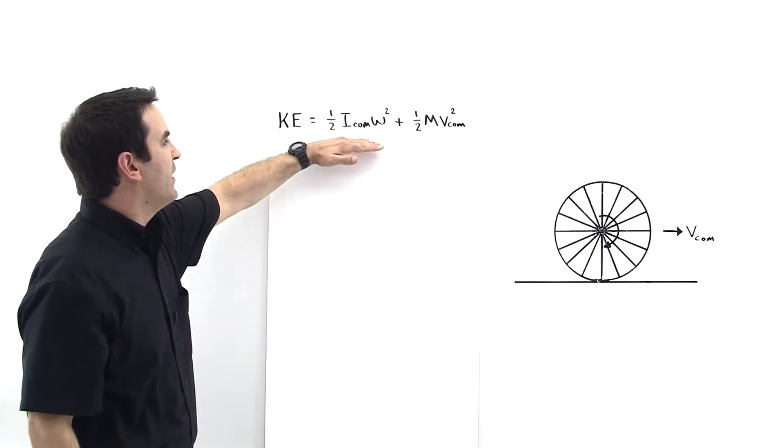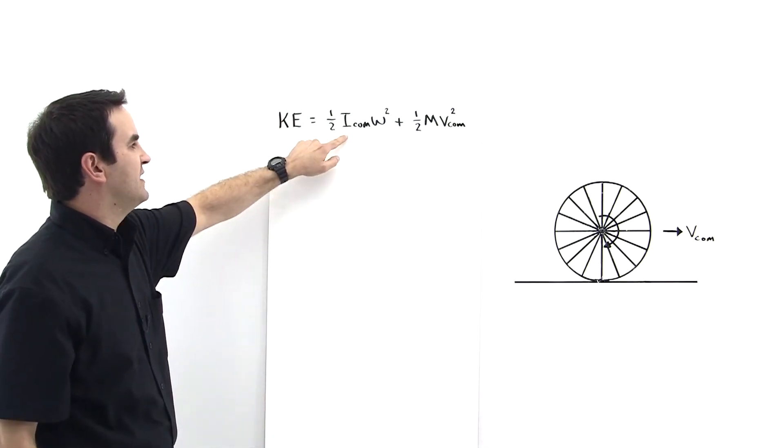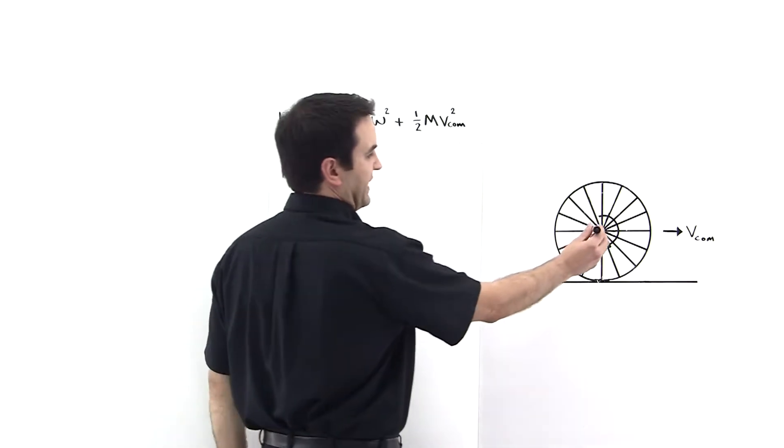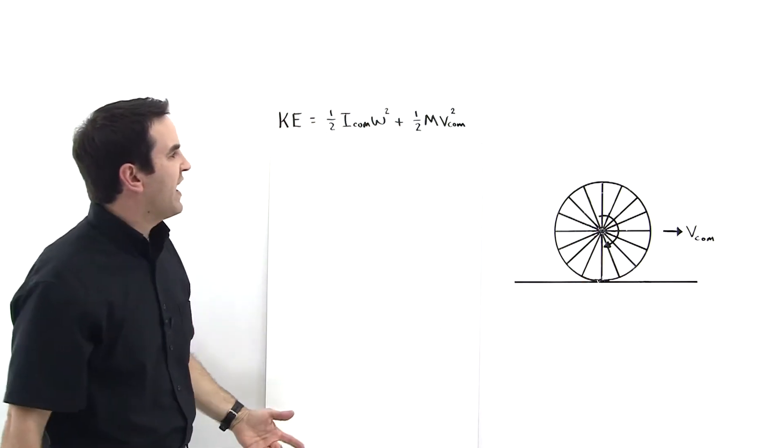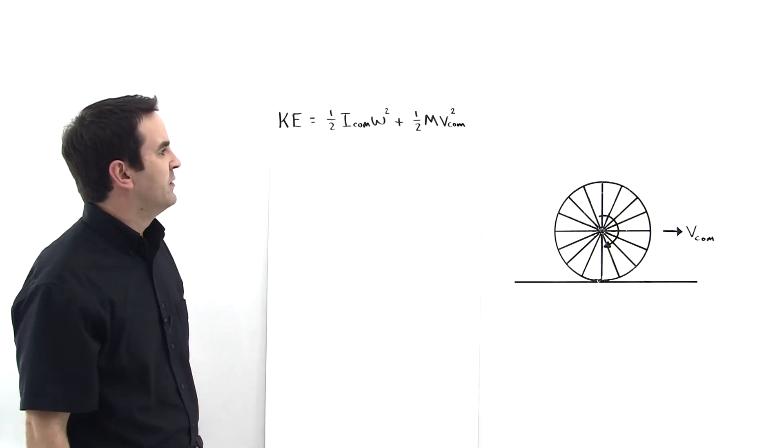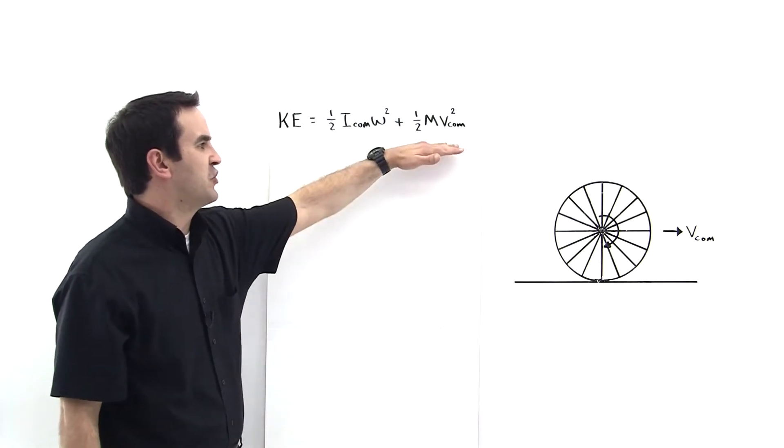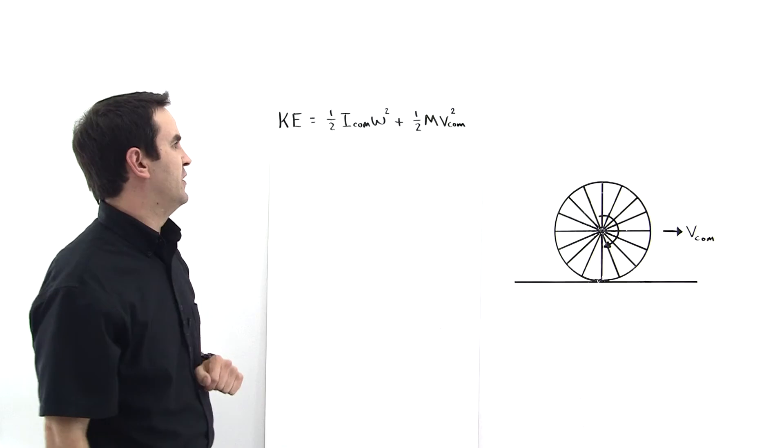It's due to its rotation, one half I omega squared where I is about the center of mass, that's the moment of inertia about this center point here, plus one half m v center of mass squared. This is just the traditional one half m v squared term.